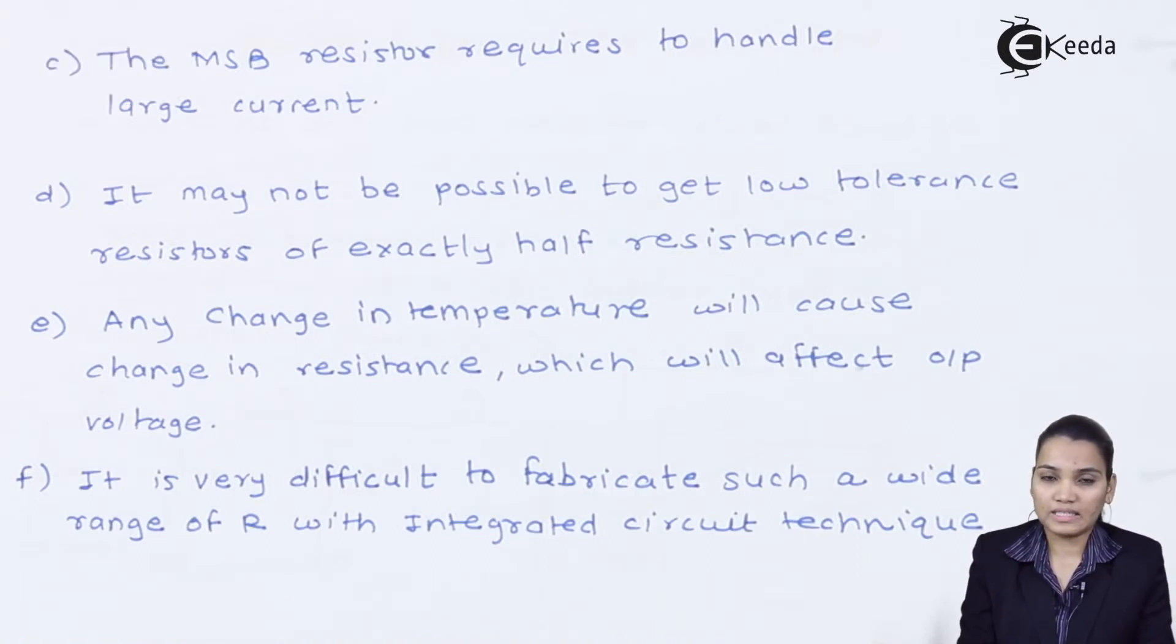And the final drawback is that because of the wide variety of tolerance and wide variety range of resistance, it is very difficult to fabricate it on the integrated circuit chain. So that's why we have seen the various drawbacks of weighted resistor D2A converter. Therefore, we cannot refer this and we cannot recommend this D2A converter.